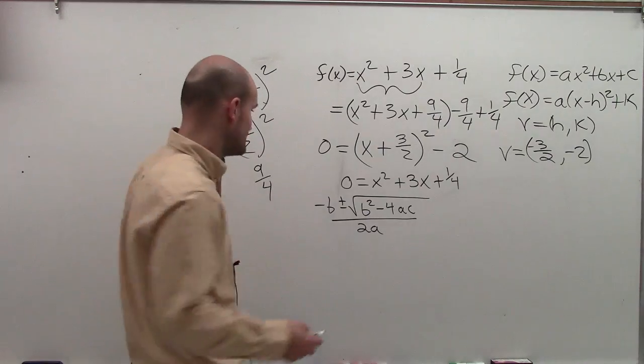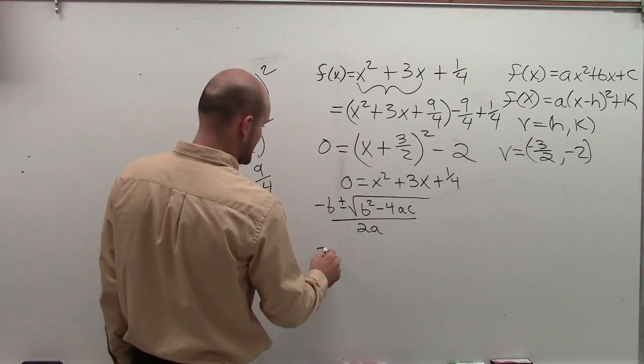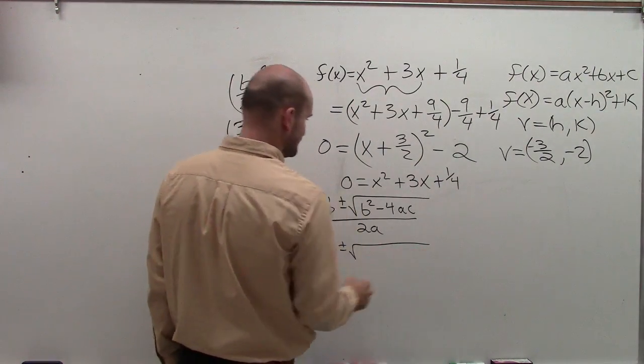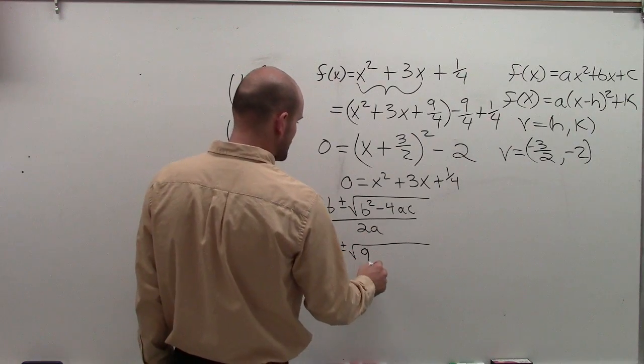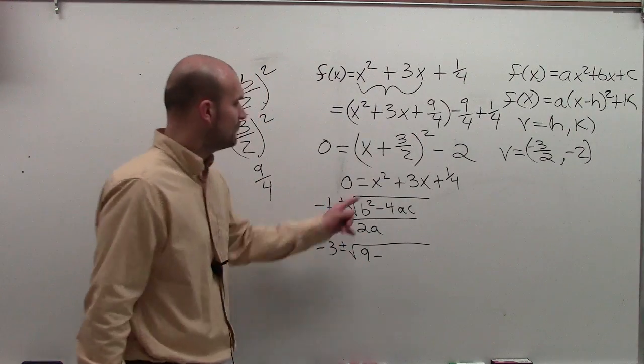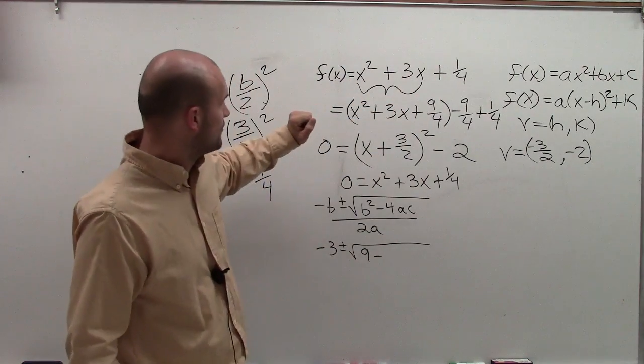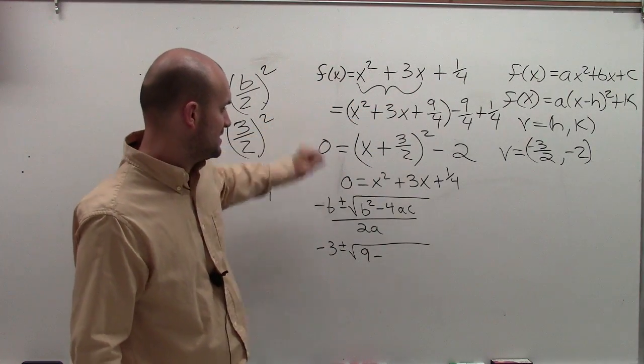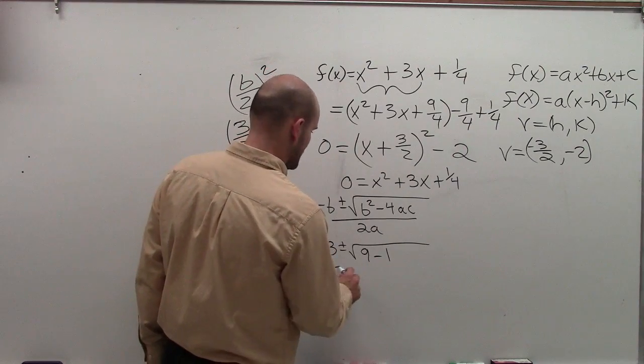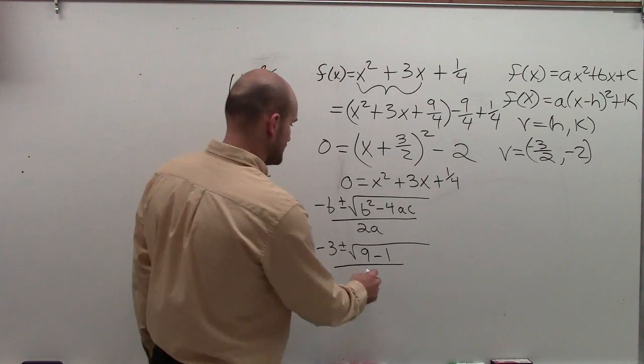So now when I plug in my terms, my b is 3, so I have negative 3, plus or minus b squared, which is going to be 9, minus 4 times a, which is 1, times c. So 4 times a times c, which is 1, divided by 2 times a, which is 2.